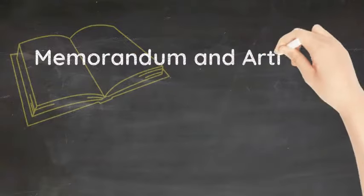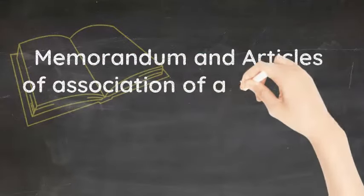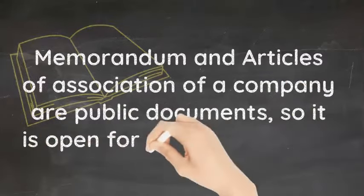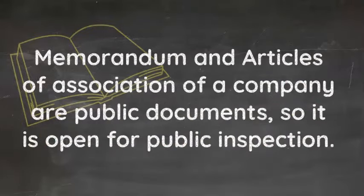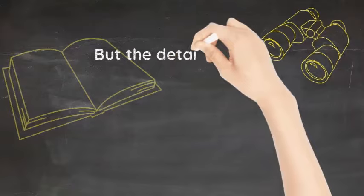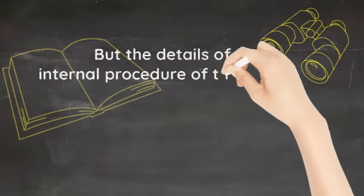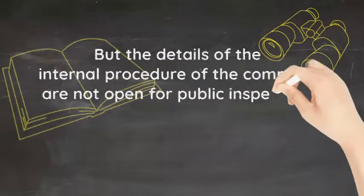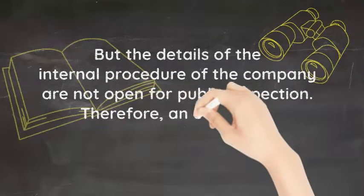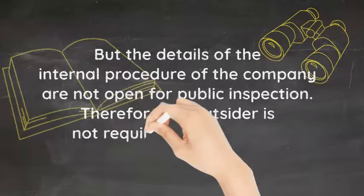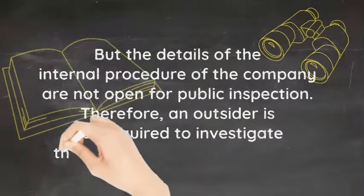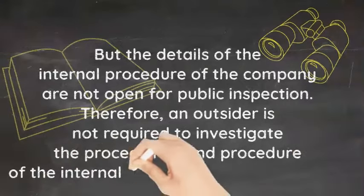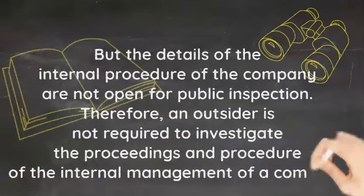Memorandum and articles of association of a company are public documents, so they are open for public inspection. But the details of the internal procedure of the company are not open for public inspection. Therefore, an outsider is not required to investigate into the proceedings and procedure of the internal management of a company.